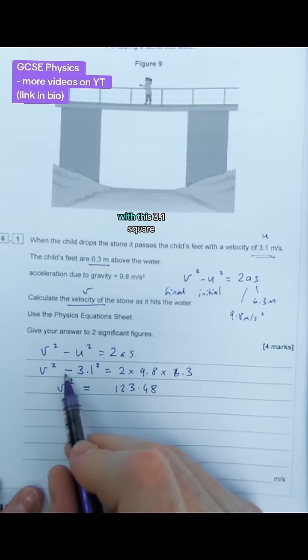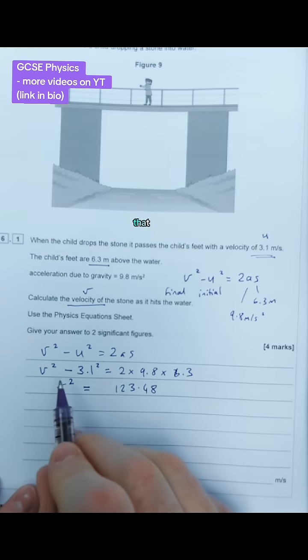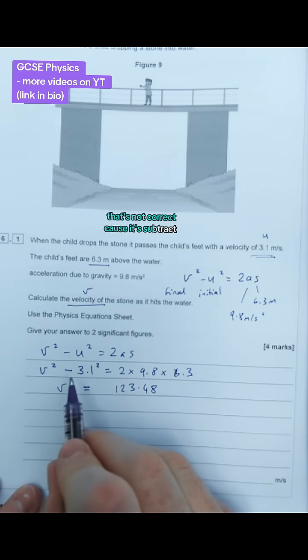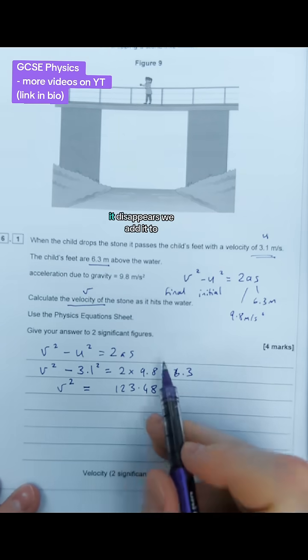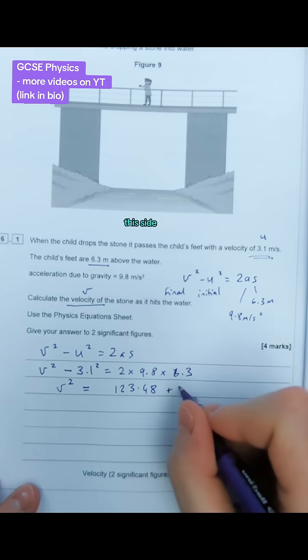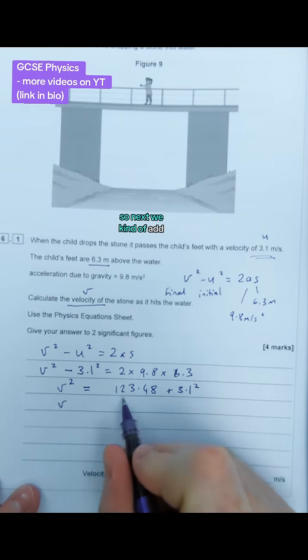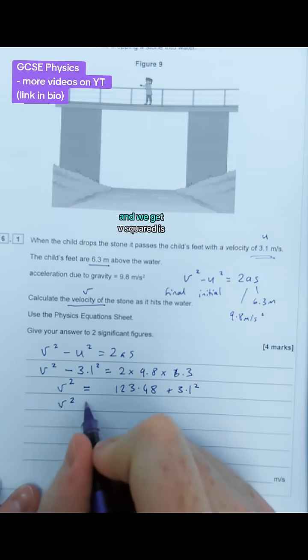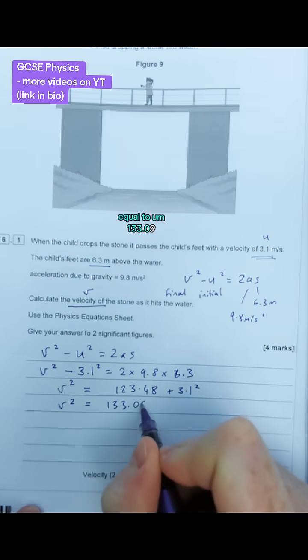Next, we've got to figure out what to do with this 3.1 squared. A lot of people make the mistake of dividing this number by that. That's not correct because it's subtracted from v². We have to do the opposite, which is to add it. So we add it from this side, it disappears. We add it to this side, and it stays there. We add 3.1 squared to get v² equals 133.09.